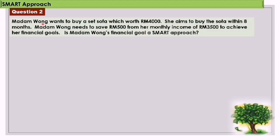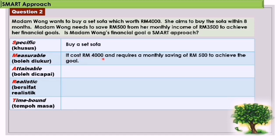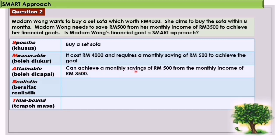Question 2: Madam Wong wants to buy a sofa set worth RM4,000. She aims to buy the sofa within 8 months. Madam Wong needs to save RM500 from her monthly income of RM3,500 to achieve her financial goal. Is Madam Wong's financial goal a SMART approach? S - Specific: buy a sofa. M - Measurable: it costs RM4,000 and requires a monthly savings of RM500. A - Attainable: she can achieve a monthly savings of RM500 from her monthly income of RM3,500.